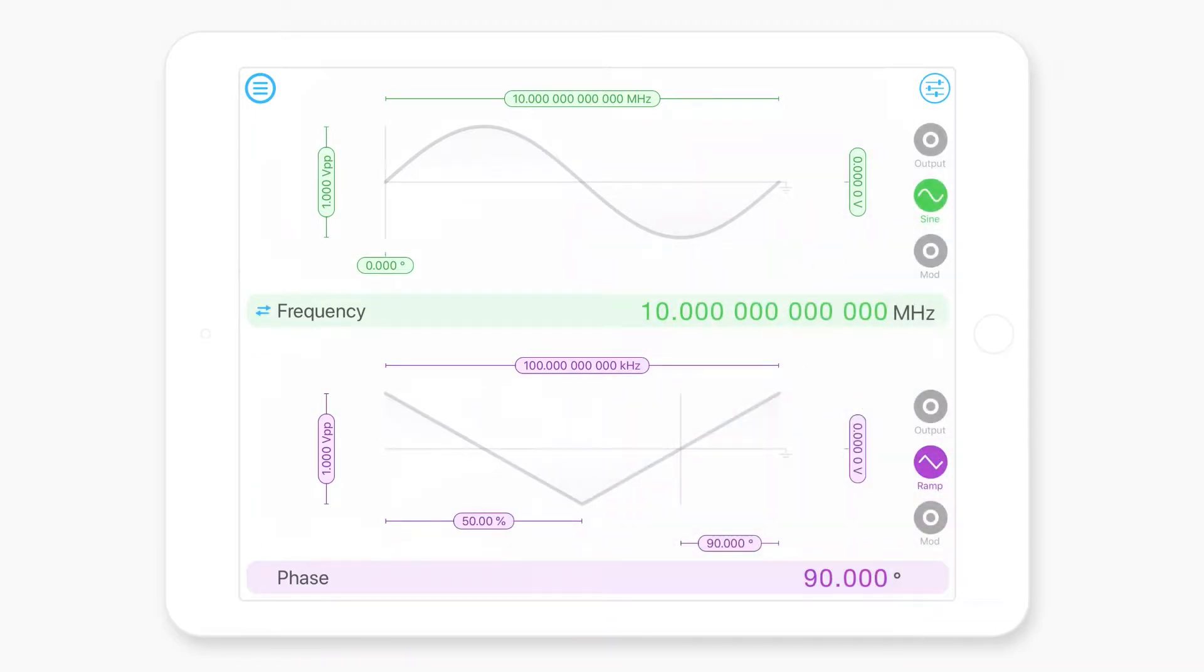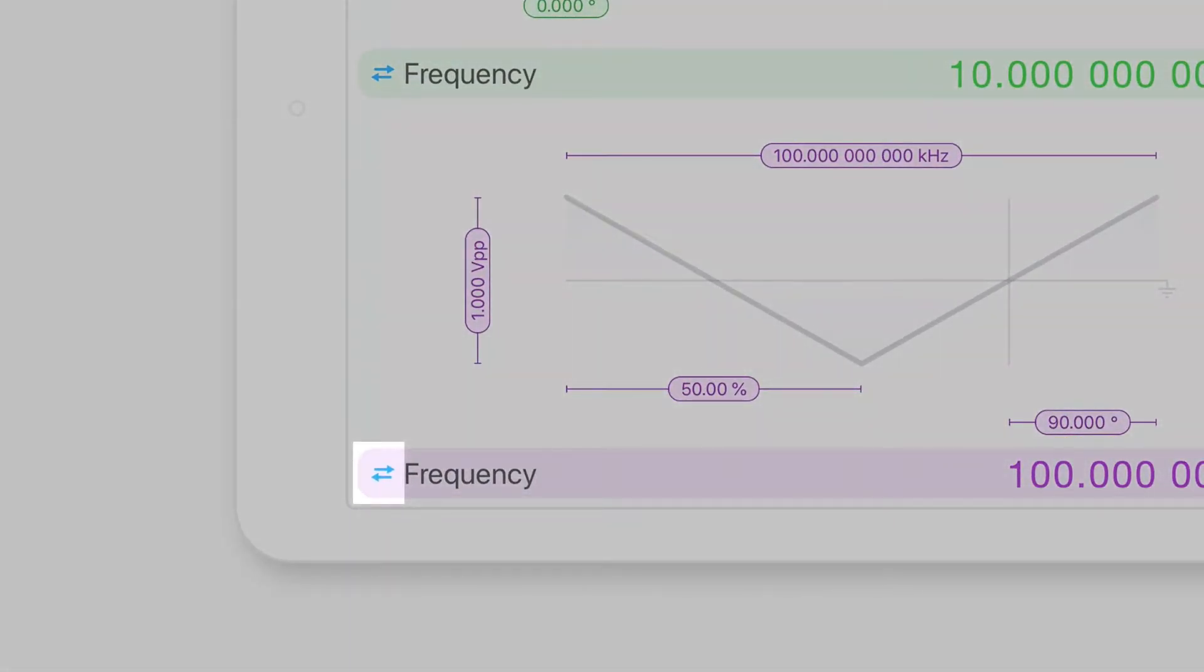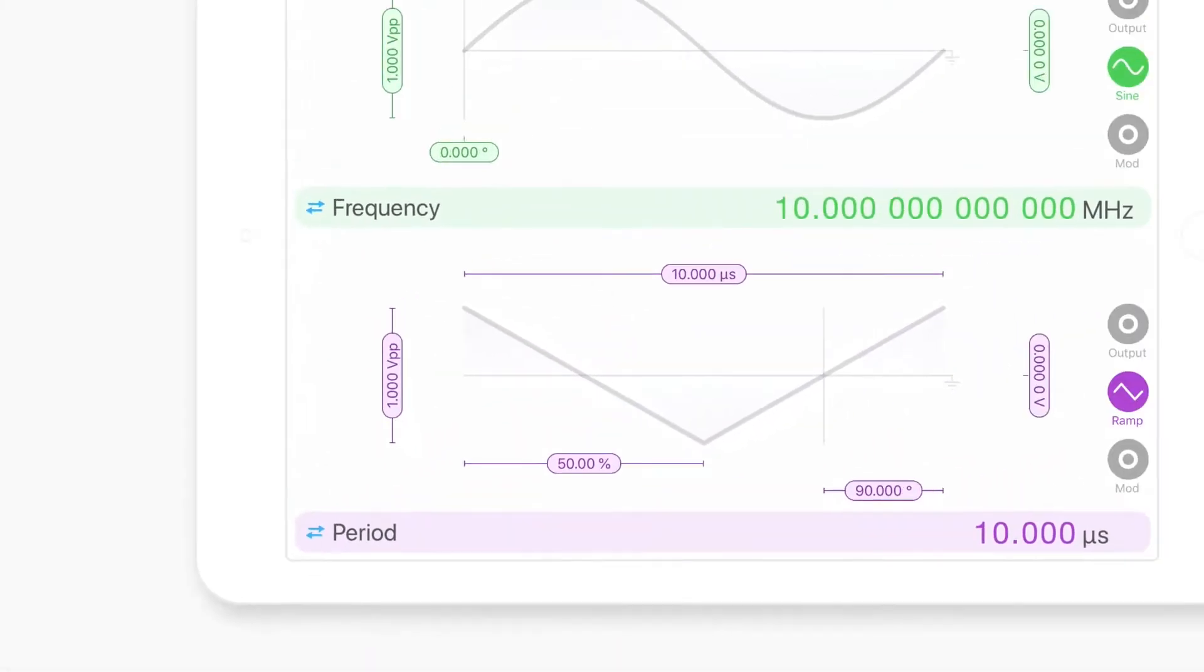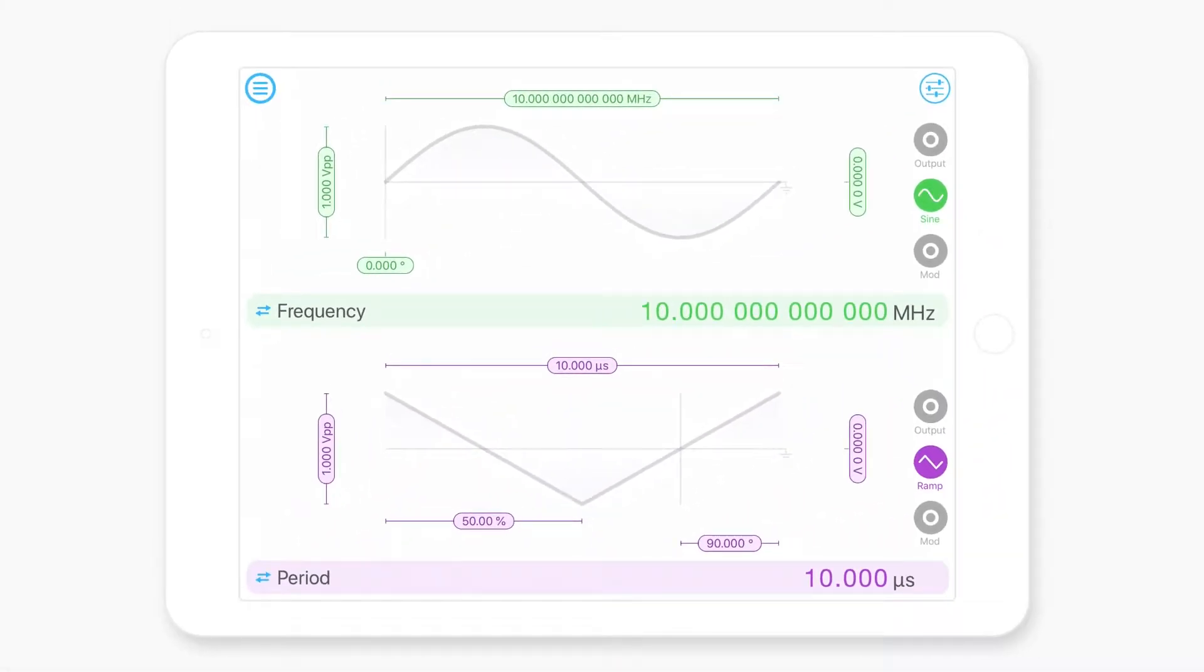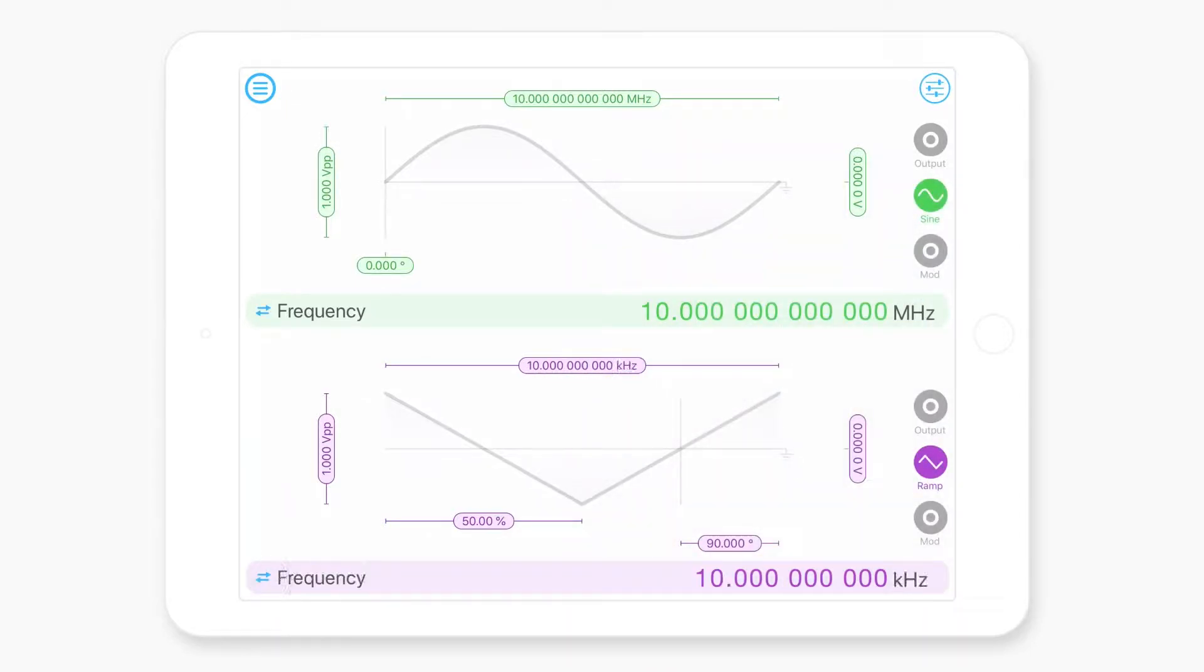But if we also wanted to tune the period instead of the frequency, what we can do is actually tap this little unit switch down the bottom left. And that'll allow us to instead set the waveforms period and then the units will then carry back to frequency if we then switch back.